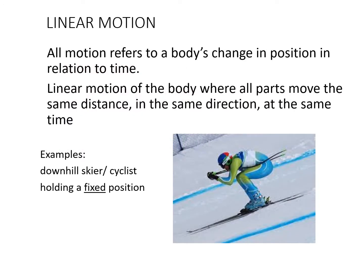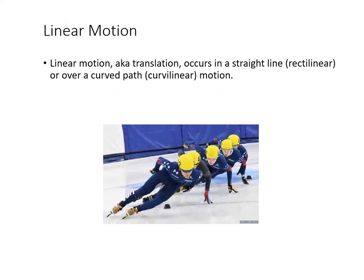Linear motion is where all body parts move in the same direction at the same time. Importantly, the athlete doesn't actually move their joints — the skier in a fixed position going down a straight or curved line demonstrates linear motion as long as the arms and legs don't move. This can be called rectilinear if straight-line, or curvilinear if on a curved path.